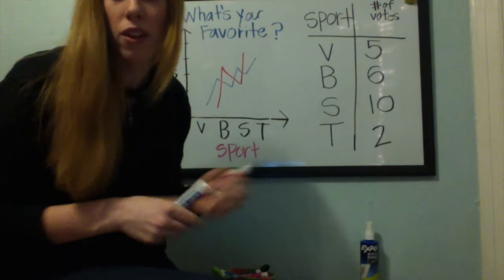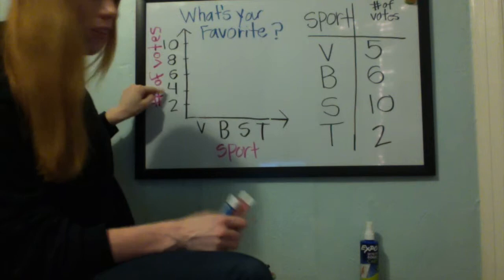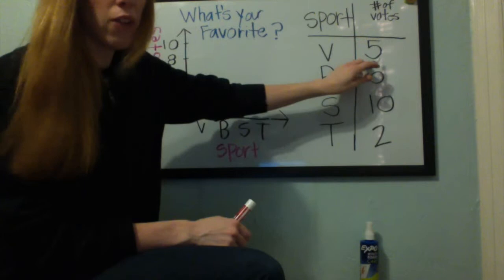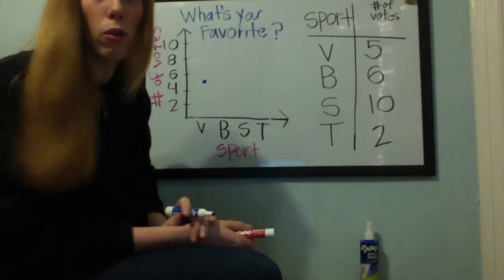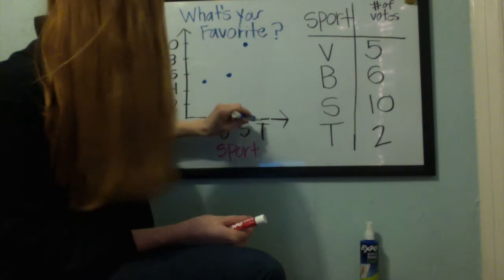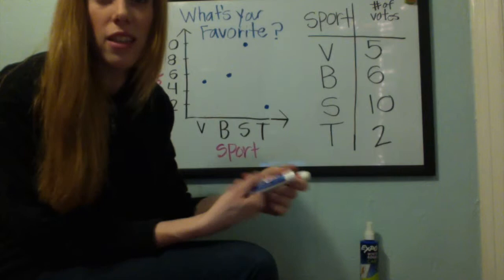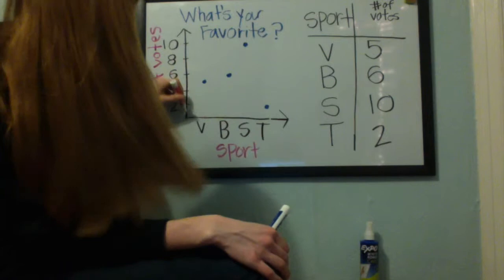To start, we're going to look at our table again. Make sure we have our title, our labels, and our scale. Once that's done, we see again that volleyball has five votes. So instead of doing a bar, we're going to start at volleyball and go up five and plot a single point. Basketball has six, so let's go to six for basketball. Once this is done, we are going to connect the dots from left to right, starting at the very corner of your x and y intersect. Moving from left to right: first volleyball, then basketball, then soccer, and down to tennis.